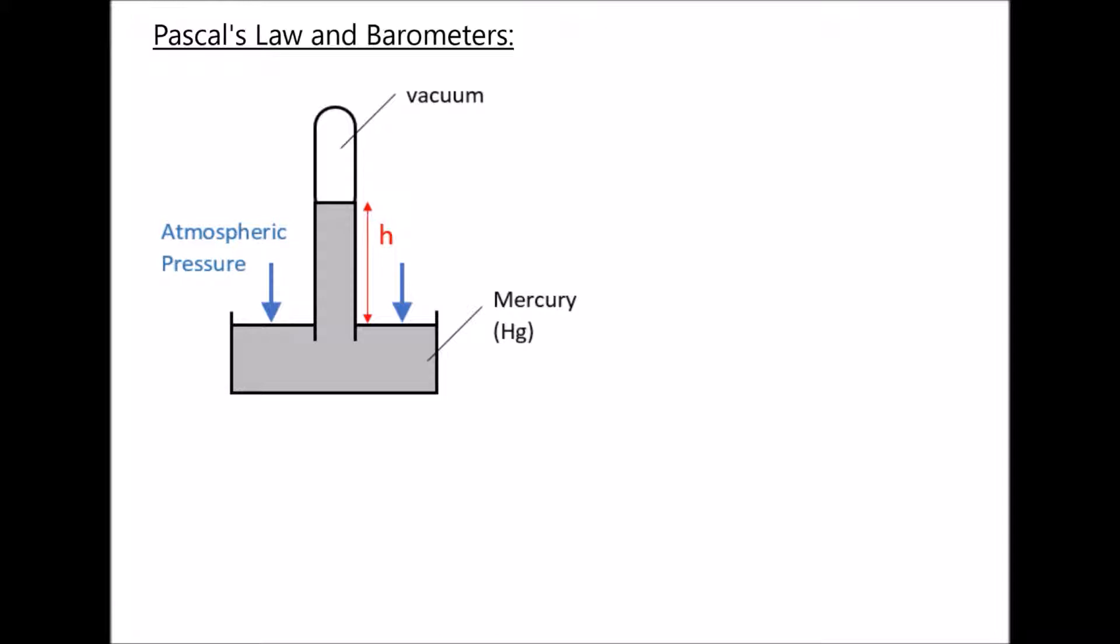Now as a point of reference, atmospheric pressure at sea level is 101,325 pascals. The further we move away from sea level, we would expect that pressure to drop as the air becomes thinner.